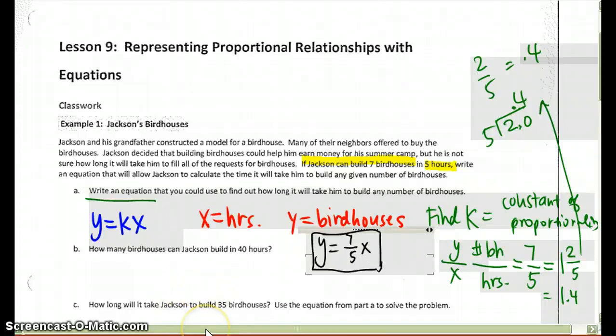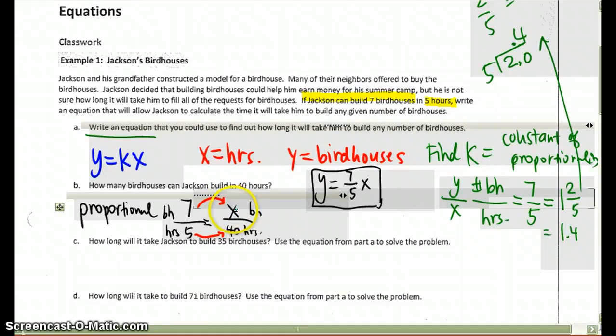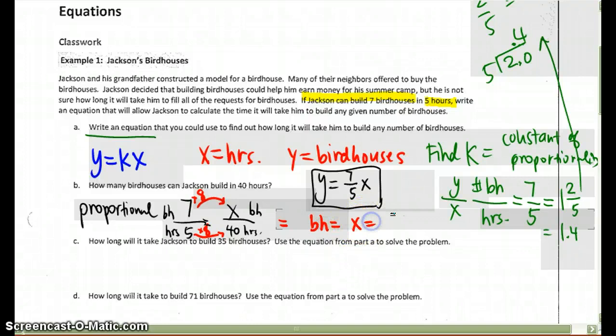How many birdhouses can Jason build in 40 hours? I can actually use a proportion to set up that problem. Since 7 birdhouses take 5 hours, then I can create a second ratio that represents x number of birdhouses out of the 40 hours. These are proportional, so if I take 5 and multiply it by 8 to get 40, and I can take 7 times 8, I'll get 56. So the number of birdhouses that I need is 56 birdhouses. I will always box my answers.